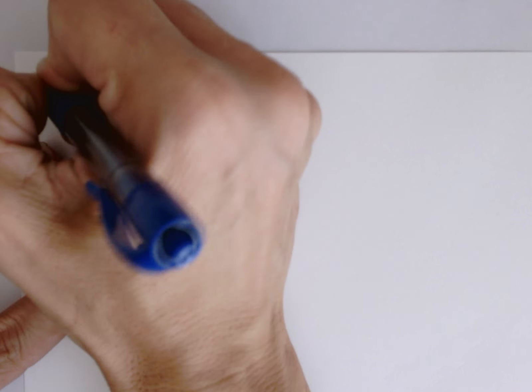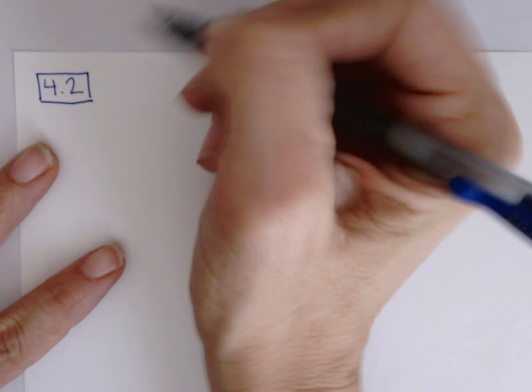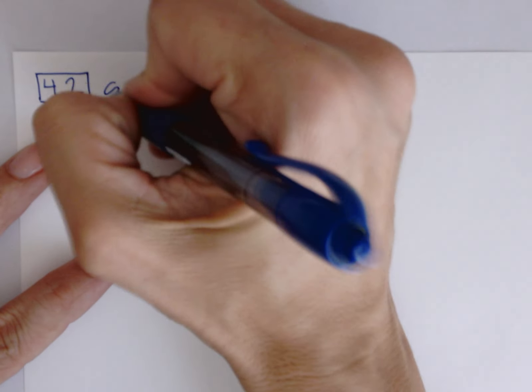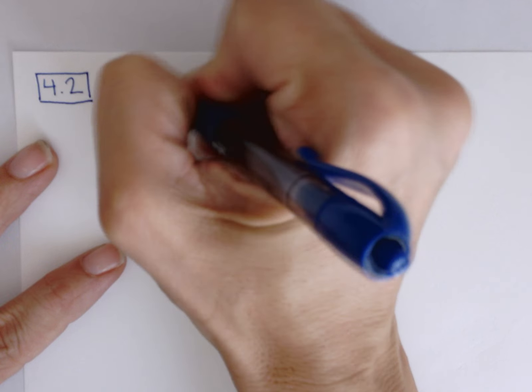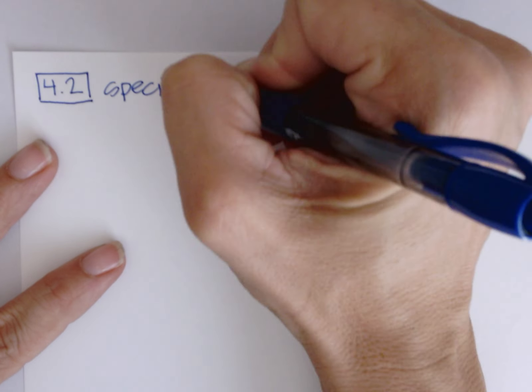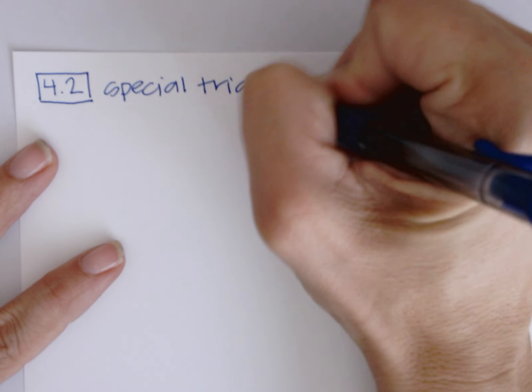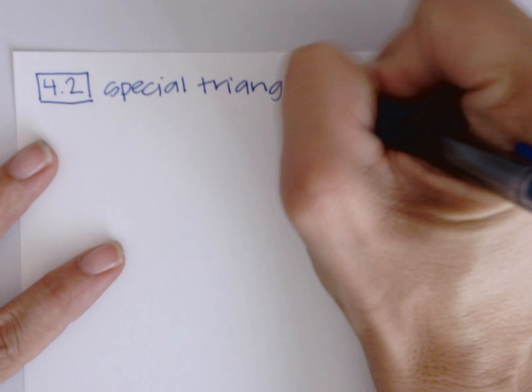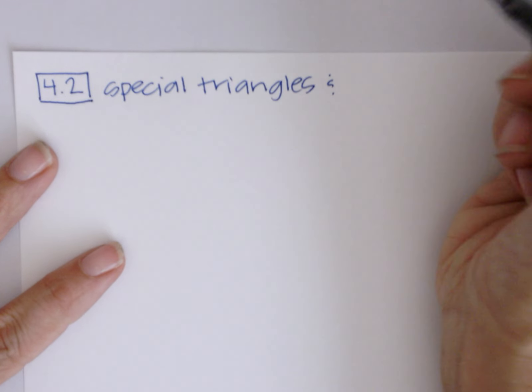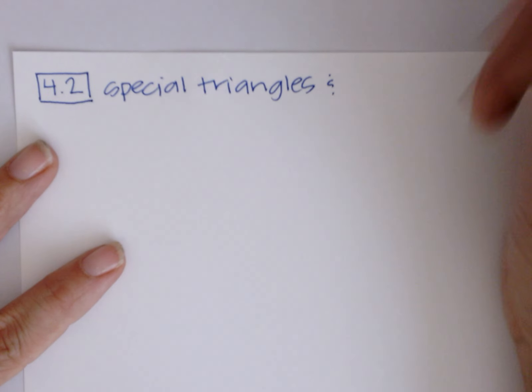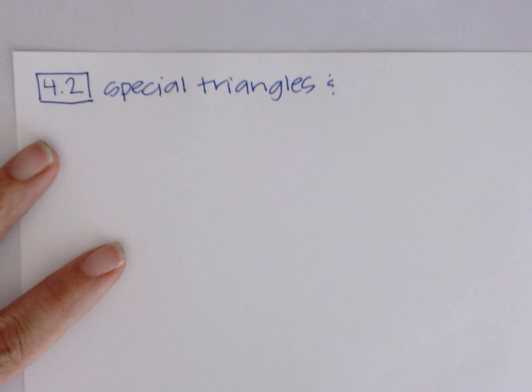Today we're doing section 4.2. Section 4.2 is special triangles combined with the trig functions. We're going to stay in quadrant one today.